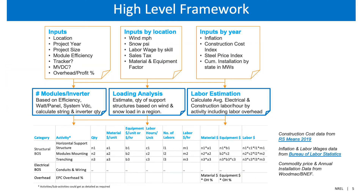This is our high-level framework for our system cost modeling. Basically, in order to calculate all the key cost components we need to list out all the major steps involved in a PV installation project, like the ones highlighted with blue-colored borders here. We also need to figure out different inputs required and then set up the calculation depending on our benchmarking needs.